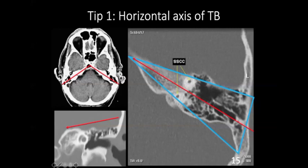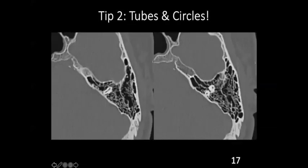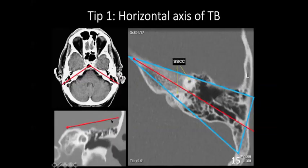The first important point is the horizontal axis of the temporal bone. The petrous part of the temporal bone can be imagined as a pyramid — the base is towards the mastoid or parietal bone, and the apex is towards the sphenoid bone. The axis is directed anteriorly and medially towards the sphenoid. When you look at a coronal section, it is also slightly inferiorly directed. We need to keep this in mind when we study individual structures.